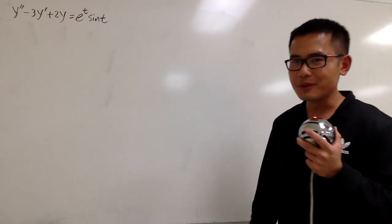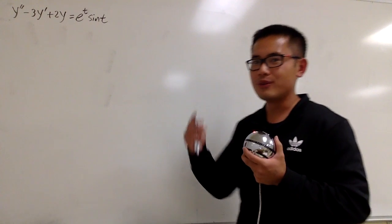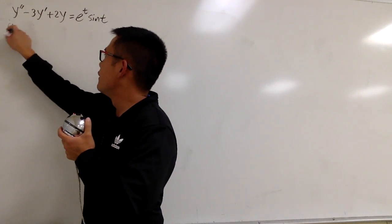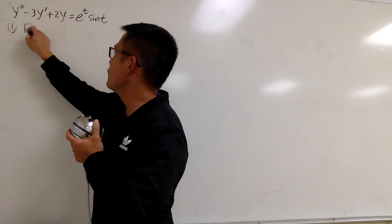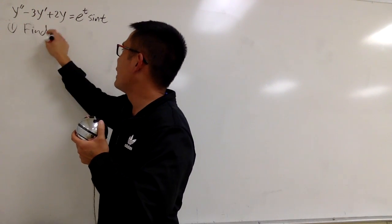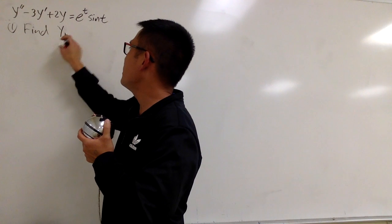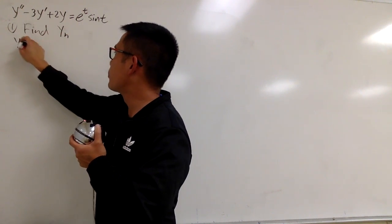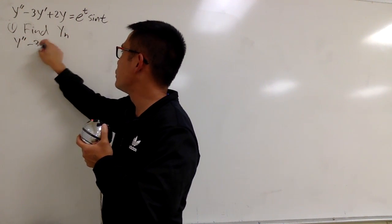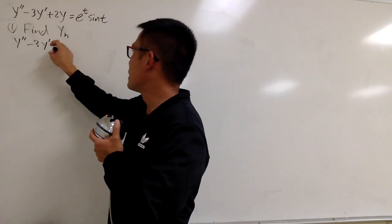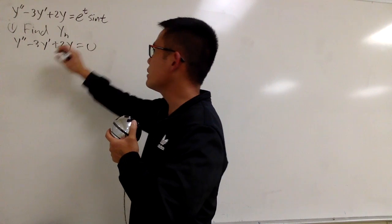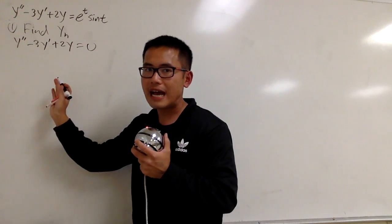You know the deal — we have to have three steps. So let me put it down right here. First, we are going to find the yh. That means I have to look at y'' minus 3y' plus 2y equals zero, like this, and then solve that.